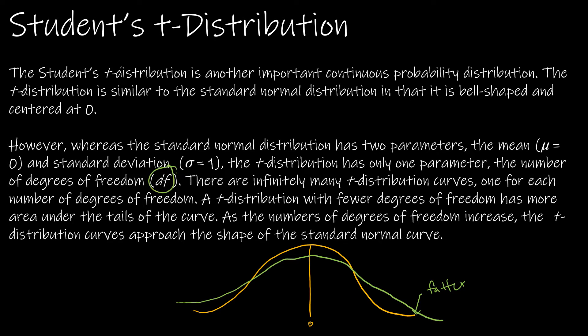For each degree of freedom, it's going to resemble more and more the normal distribution. So that red line is going to be more degrees of freedom than the green line. If I have an infinite number of degrees of freedom, then it's going to be exactly the normal curve.